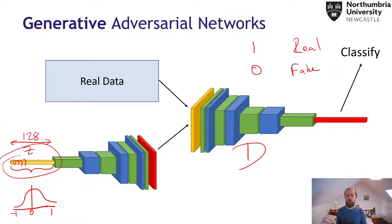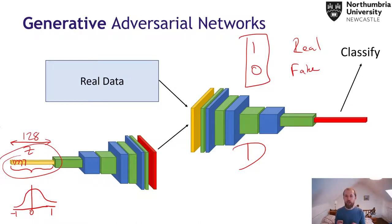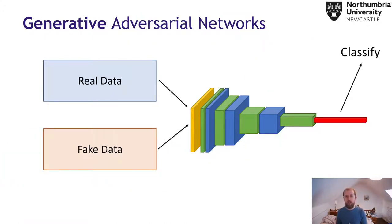Pause the video and let me know what loss function you think the discriminator is going to use. Hopefully you've worked out that we have just two classes, so we're actually going to use a binary cross entropy loss function — the one we talked about in lecture five — to classify these images. All we're interested in is whether they're real or whether they're fake. The discriminator is using that very simple loss function. It sees real data and fake data: real data has label one, fake data has label zero, and the discriminator just tries to work out which are ones and which are zeros.